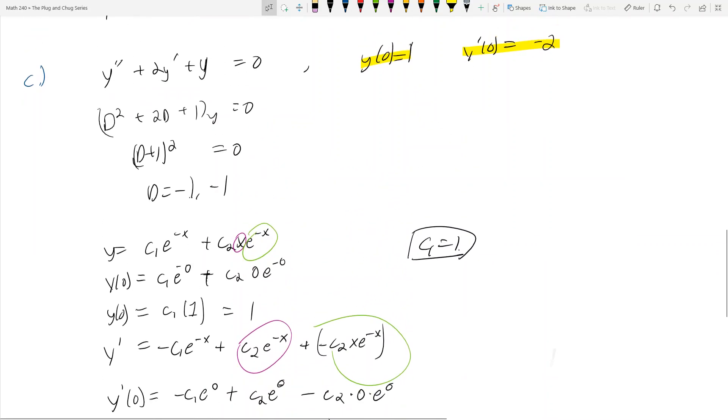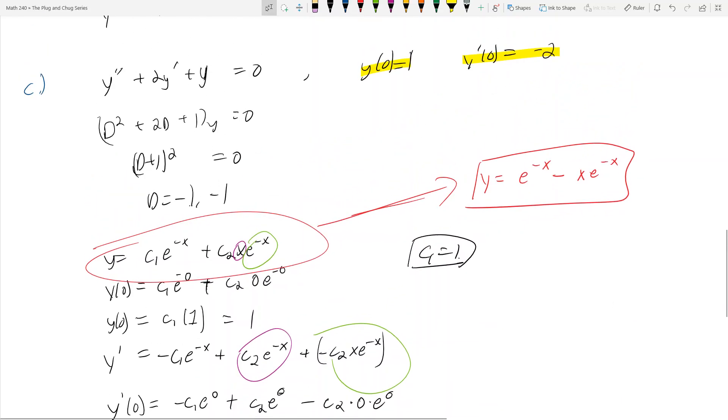My final solution is this guy, but rewritten with C1 and C2 known, so we say y equals e to the negative x minus x e to the negative x is going to be our particular solution. If you plug in 0 you'll get 1, and if you take the derivative and plug in 0 you'll get negative 2. That's how you deal with initial value problems, and we've covered the three most fundamental problems dealing with linear homogeneous differential equations.